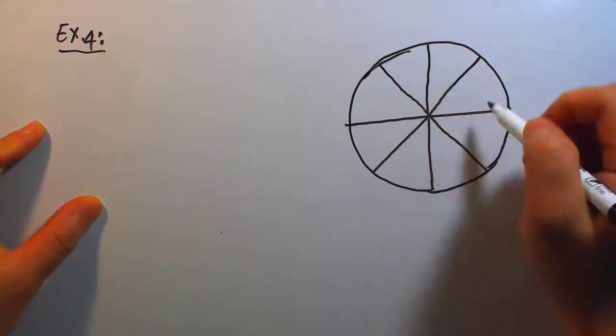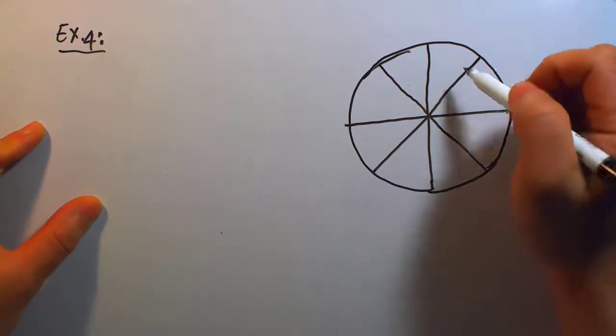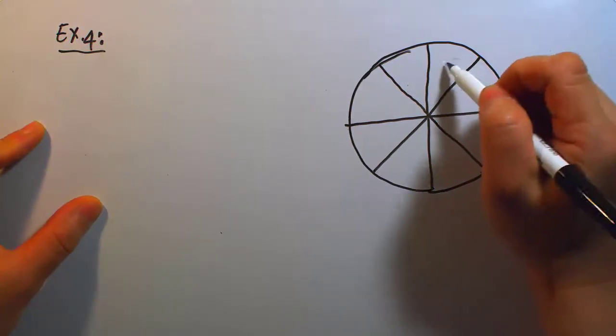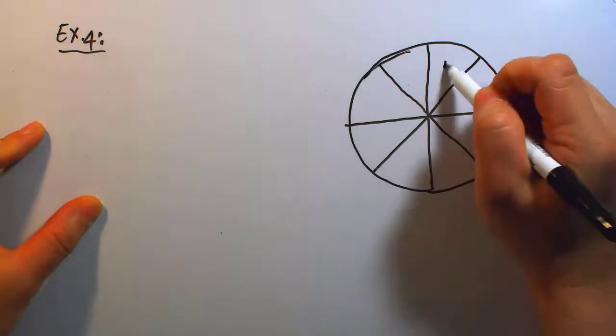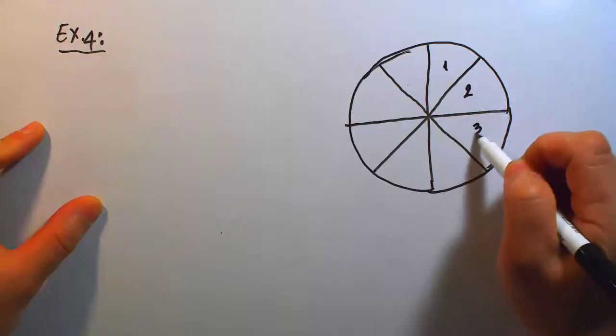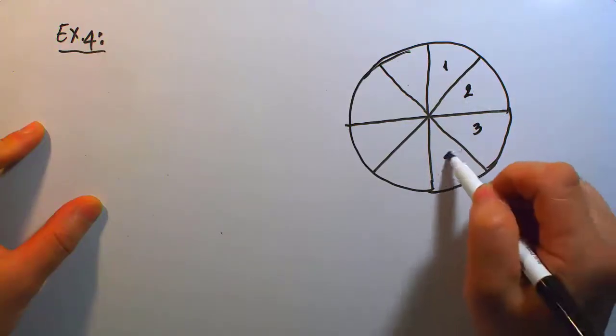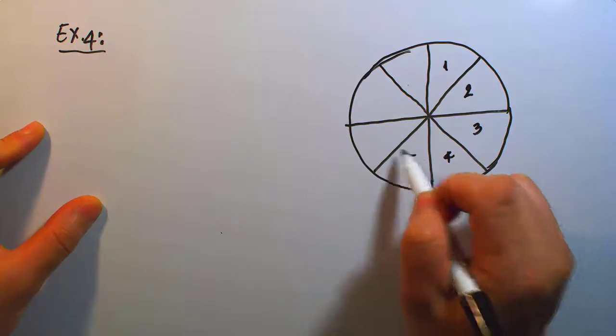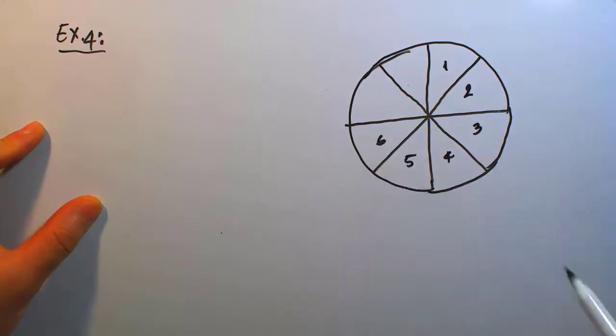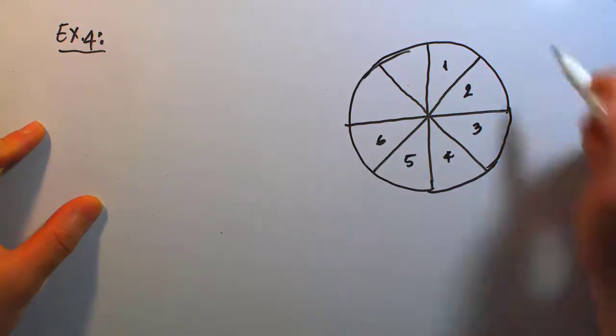In this example I can only have 8 sectors. I'm going to give each a numerical label: 1, 2, 3, 4, 5, and 6.